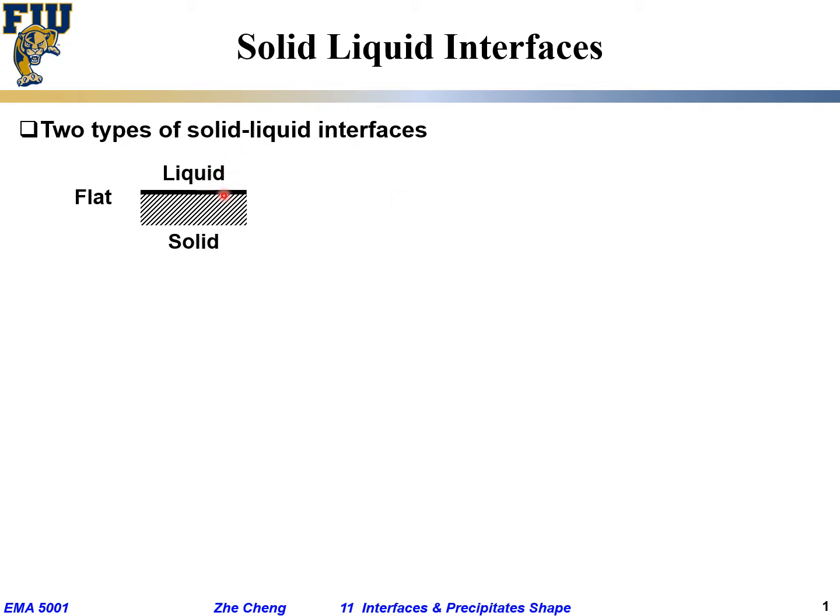One type of solid-liquid interface is so-called atomically flat, which means at atomic scale you look at that interface, it's very flat. For these materials they quite often satisfy this relationship: the ratio between L_f, the latent heat for fusion, divided by the melting point is greater than four times the gas constant.